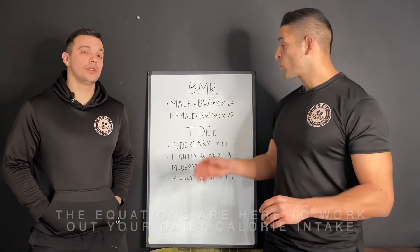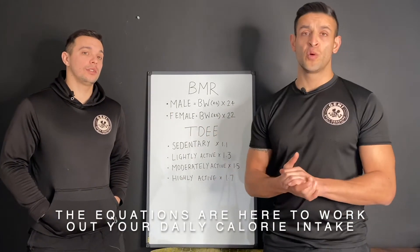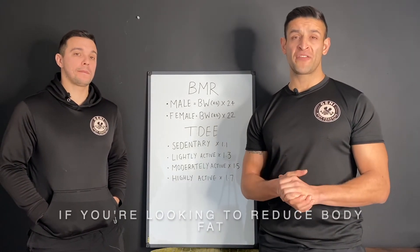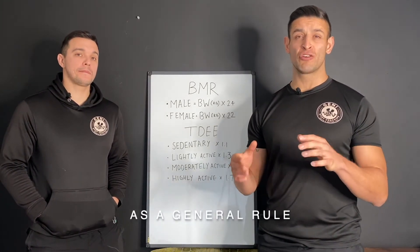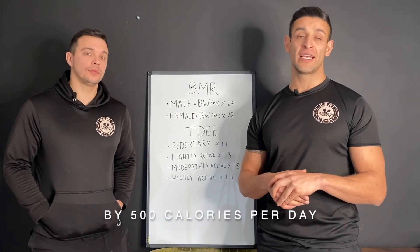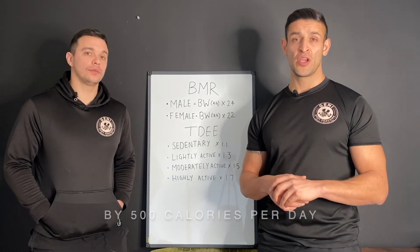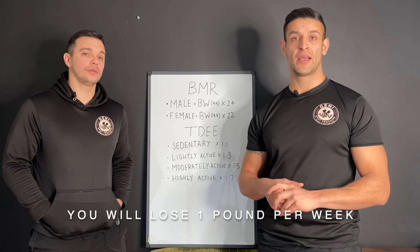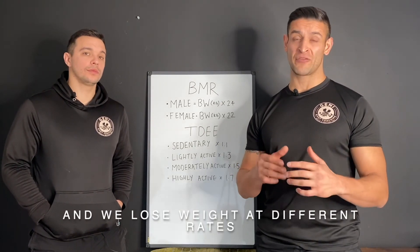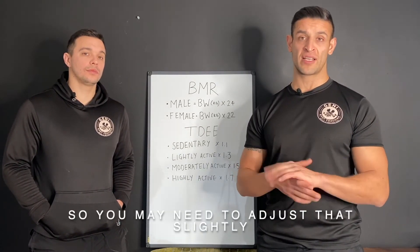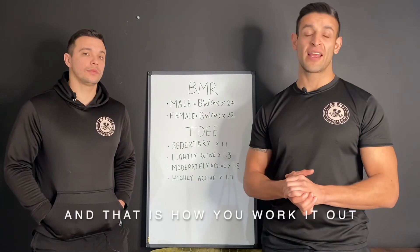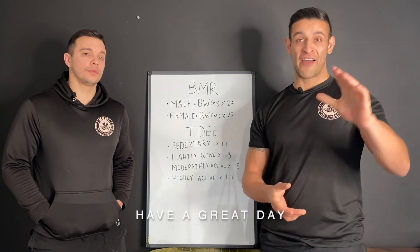In summary, the equations are here to work out your daily calorie intake. If you're looking to reduce body fat, as a general rule, if you lower your daily calorie intake by 500 calories you will lose one pound per week. Everybody's body is different and we lose weight at different rates, so you may need to adjust that slightly. The equations are there and that's how you work it out — have a great day!